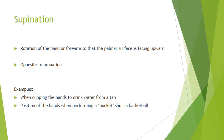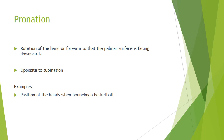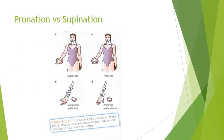Supination is the rotation of the hand or forearm so that the palm or surface is facing upwards. Pronation is the rotation of the hand or forearm so that the palm or surface is facing downwards. Pronation versus supination.